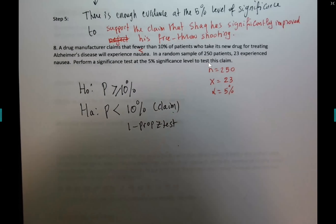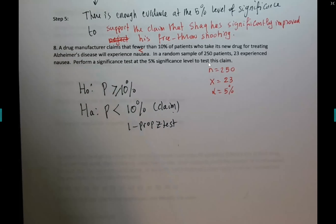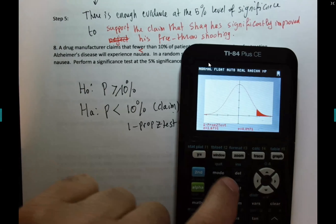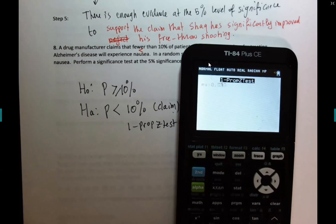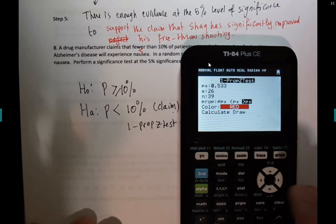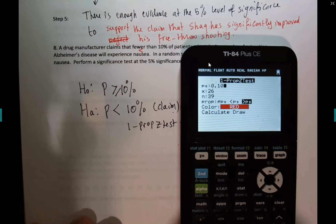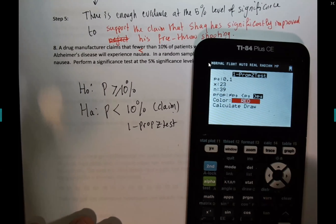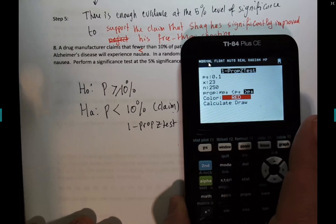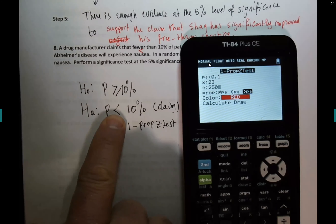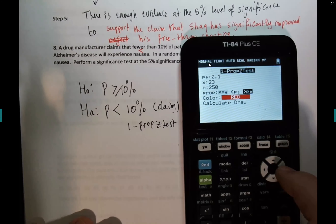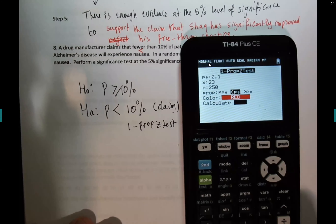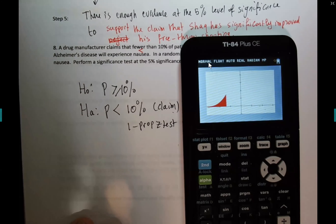Let's use the calculator right away — go to STAT, TESTS, number 5 — 1-PropZTest. It's against 0.10. x is always the smaller number — number of successes — which is 23. n is 250. The alternative sign is 'less than' — the middle one. Calculate or draw. The p-value is going to be on the left. There you go — it's a huge p-value.